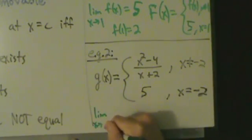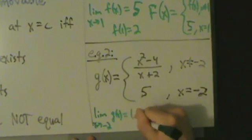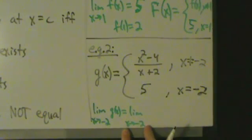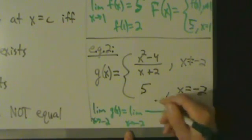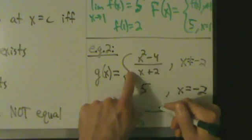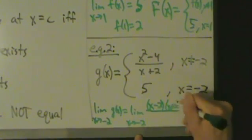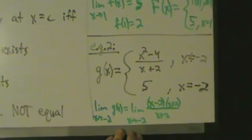So limit as x approaches negative 2 of g(x) equals the limit as x approaches negative 2. So if we take a limit as x approaches negative 2, that means that x is not equal to negative 2. It could be less than negative 2, it could be greater than negative 2, but it's not equal to it. So that means we're on this piece here. So this is going to be x squared minus 4 over x plus 2. That factors, right, into (x minus 2) times (x plus 2) all divided by x plus 2.